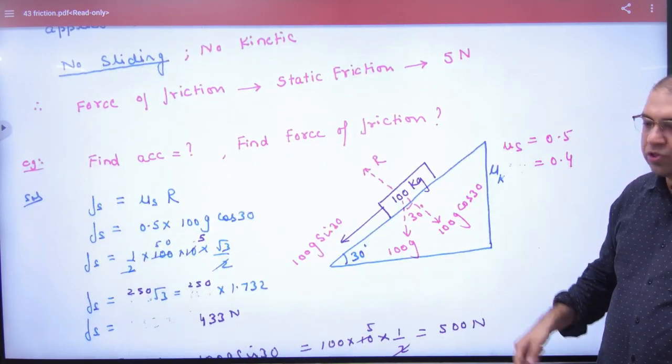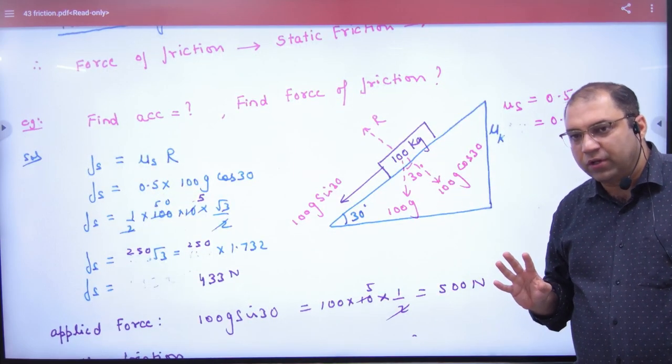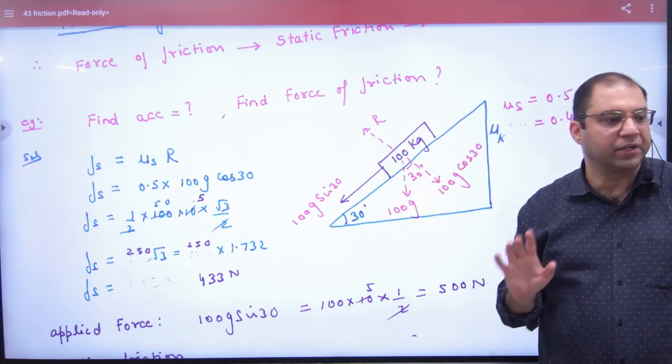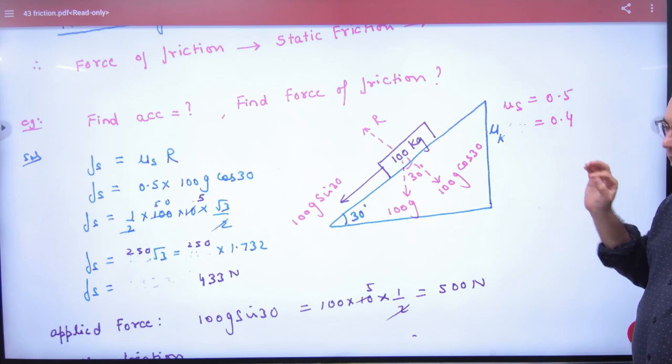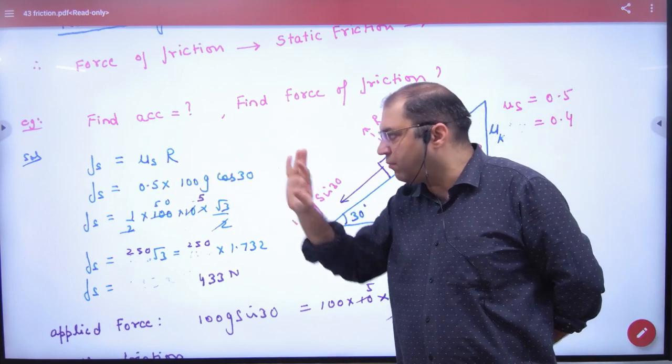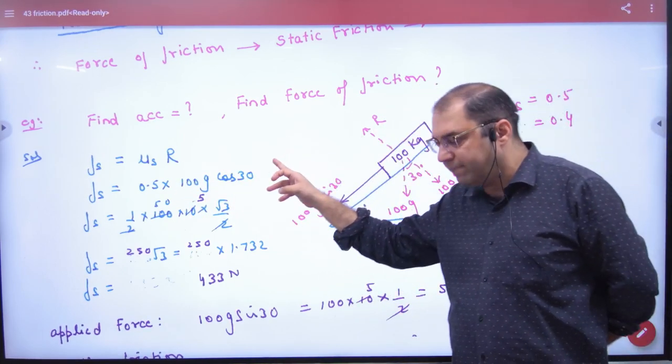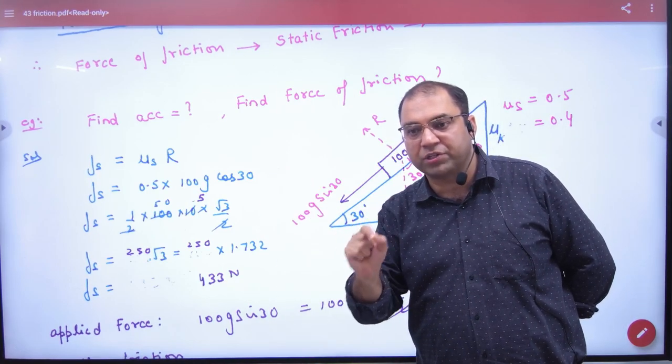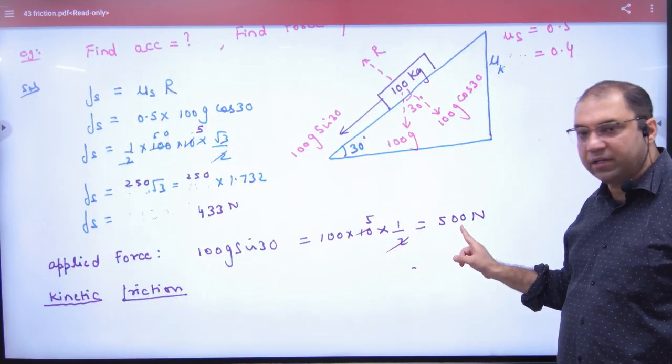But if I change the values in this question, I will change the values. I have 100 kg object. Which force will be on the body? 100g sin 30. Mu s and mu k are given. So how much force should this body have? Fs equals mu s into normal reaction. How much is the normal reaction here? 100g cos 30. Solved, the answer is 433 N. So how much force should it have? 433 N. And how much force is on it? 100g sin 30. I mean, 500 N.